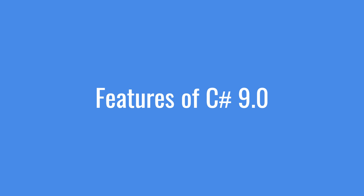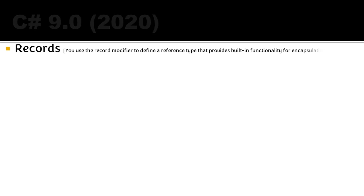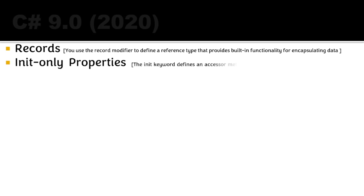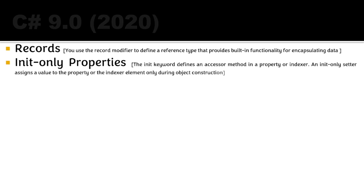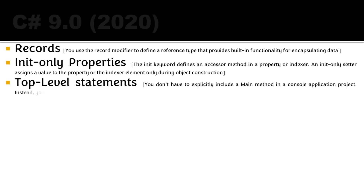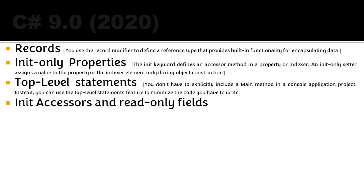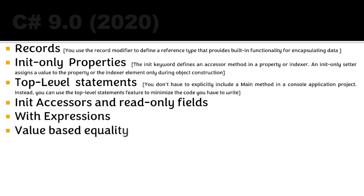C# 9.0 in 2020 introduced records — you can use the record modifier to define a reference type that provides built-in functionality for encapsulating data. Init-only properties use the 'init' keyword so a setter can only assign a value during object construction. Top-level statements remove the need for an explicit Main method in a console application, minimizing the code you need to write. Init accessors and read-only fields with expression-based equality were also included.